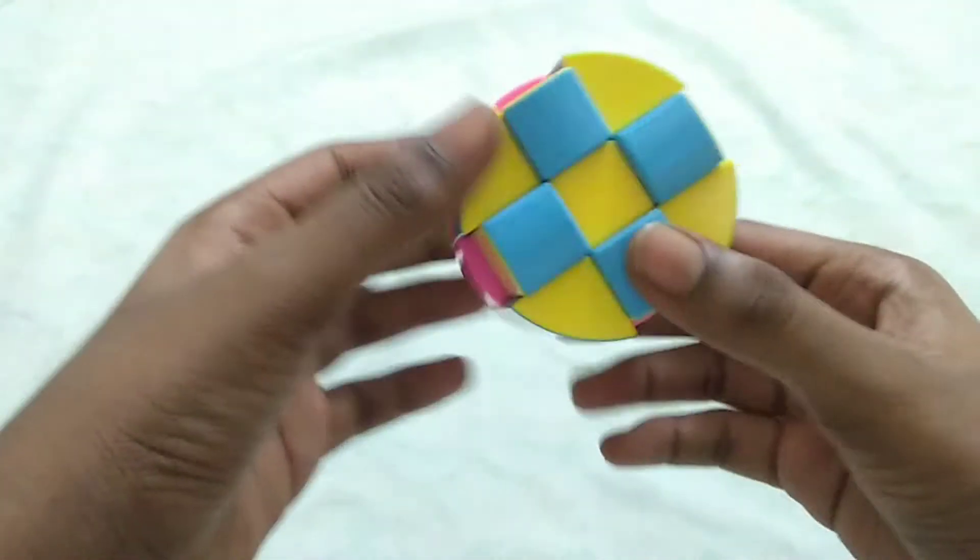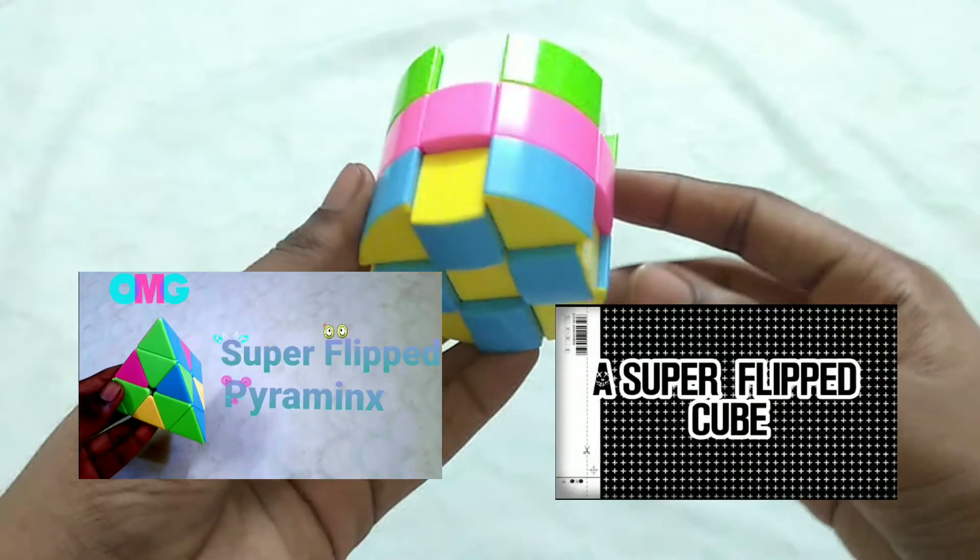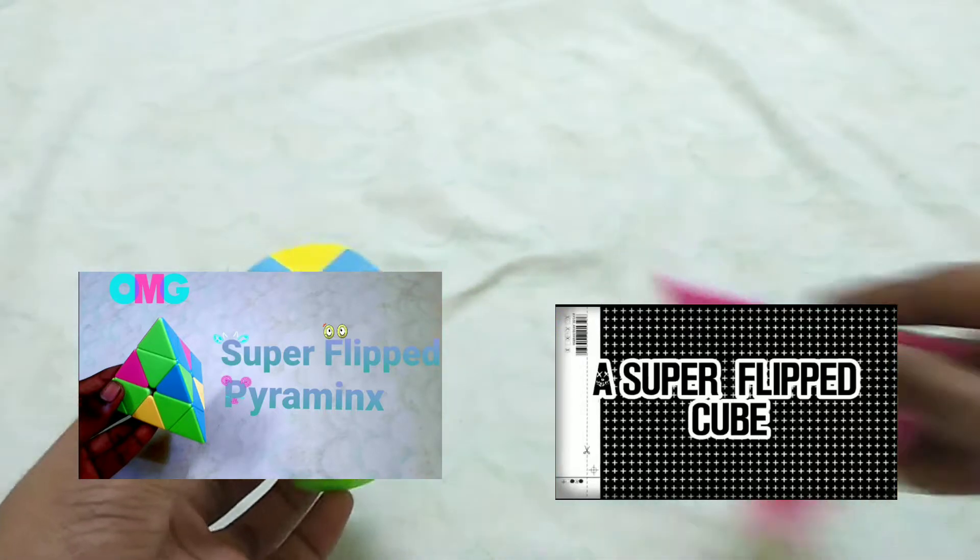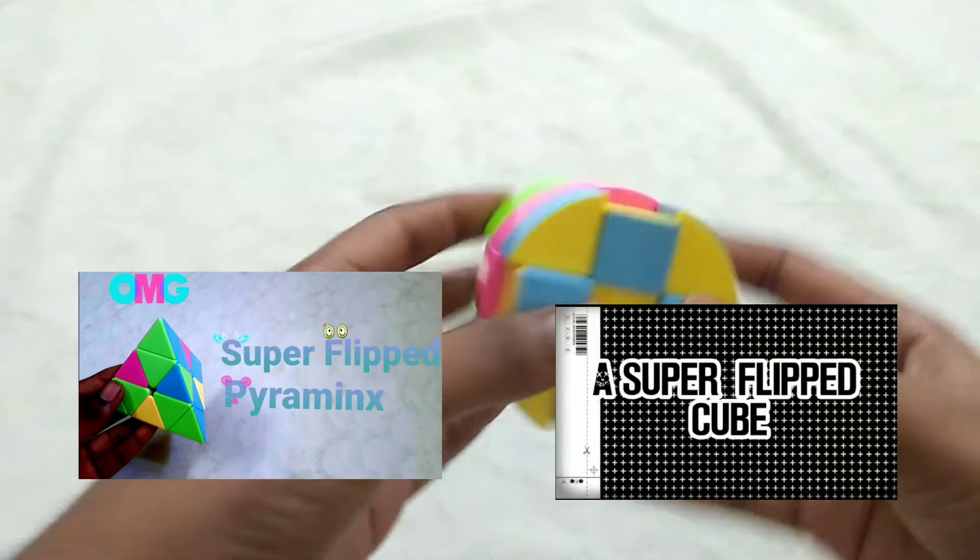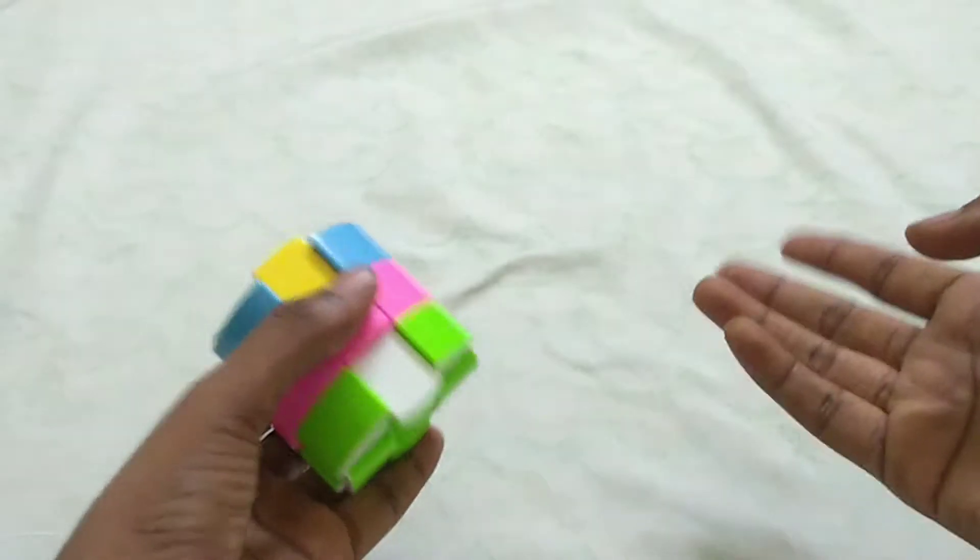Actually if you see in some of my past videos I have told you how to superflip a cube, even a pyraminx or a mirror cube. And this is a barrel cube and this barrel cube contains some edges so that we can flip those edges.